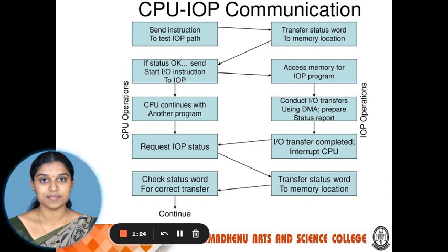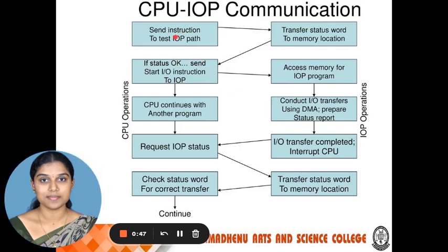Once everything is completed, the input-output processor interrupts the CPU for the next process. The CPU then establishes another test connection, and once confirmed, it enables the original path for the IOP until all processes are complete. While IO transfers are occurring in DMA mode, the CPU accesses other devices for other processes. This is the communication between CPU and IOP — showing how the IOP and CPU share instructions between each other. This covers input-output processor in digital fundamentals and architectures.